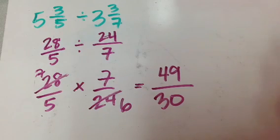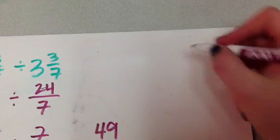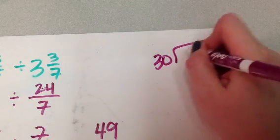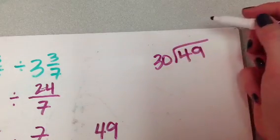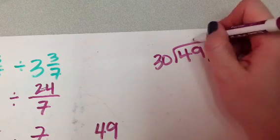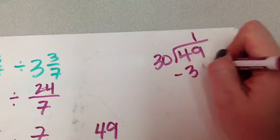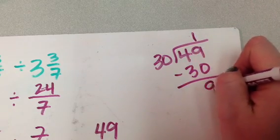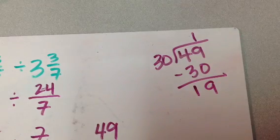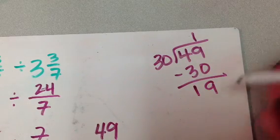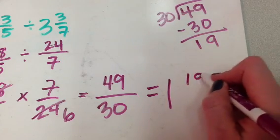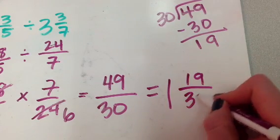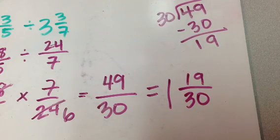So I have to come up here, I'm going to do 30 into 49, okay? I know 30 times 2 is 60, so that's more than 49. It's only going to go in once. So then I'm going to subtract, and I have 19 left, okay? So I come down here, and I'll write it as a mixed number, 1 and 19 thirtieths, okay?